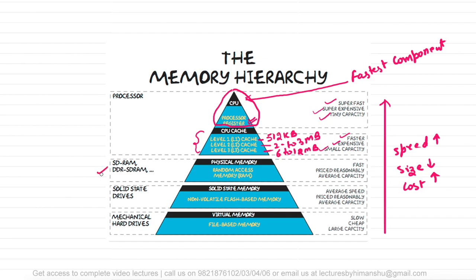The next level in the hierarchy is main memory, which we generally call RAM. The main memory is fast but less expensive than cache memory or registers. It is of average capacity — on general systems we have around 4 GB to 16 GB of RAM. RAM is of two types: SDRAM or DDR RAM, also called DDR SDRAM.